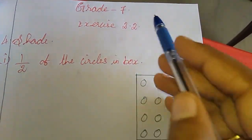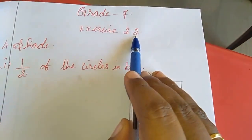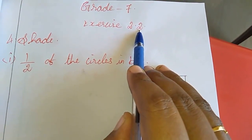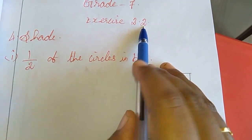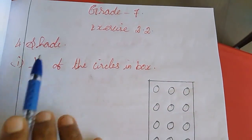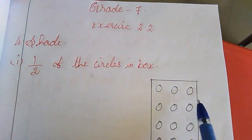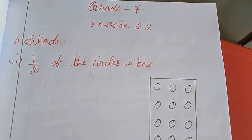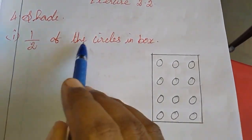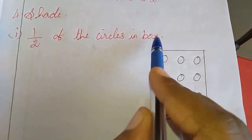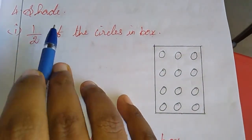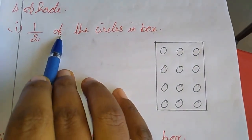In the last class, Exercise 2.2 up to 3 sums we completed. Now we will move to the fourth sum. The fourth sum is shared — they gave the sum because we want to share this. We see the first sum: 1 by 2 of the circles in box. Okay, 1 by 2 of — 'of' means multiplication.